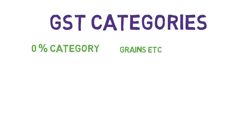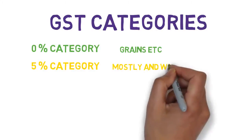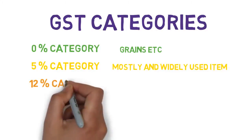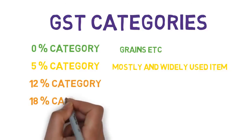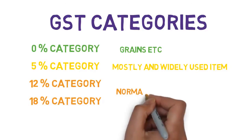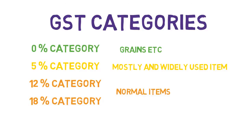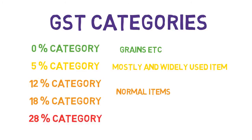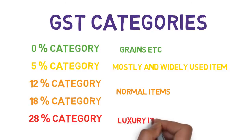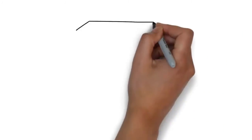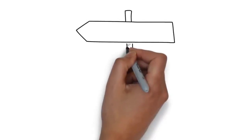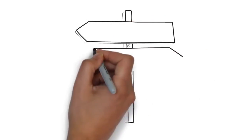There are five GST rate categories in India. The zero percent category applies to food grains, etc. The five percent category applies to most widely used items. The 12 and 18 percent categories apply to normally used items. The 28 percent category applies to luxurious items.